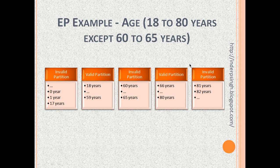As another example, let us say the system accepts any age from 18 to 80 years except 60 to 65 years. Here we form the partitions: the first is an invalid partition from negative values to 17 years. Then there is a valid partition from 18 to 59. Then 60 to 65 years is an invalid partition — the system will reject these values. Then there is a valid partition from 66 to 80 years, and finally an invalid partition of 81 years onwards. Equivalence Partitioning involves picking one value from each partition, which finds more defects and saves time.